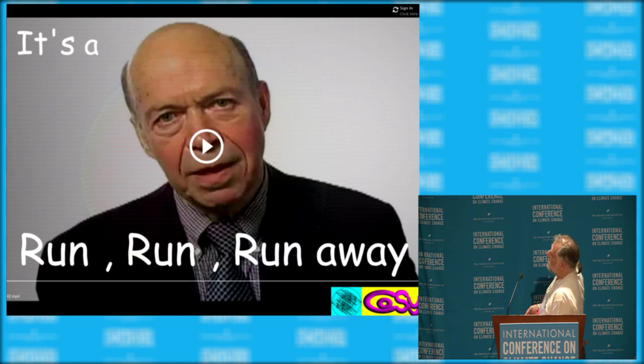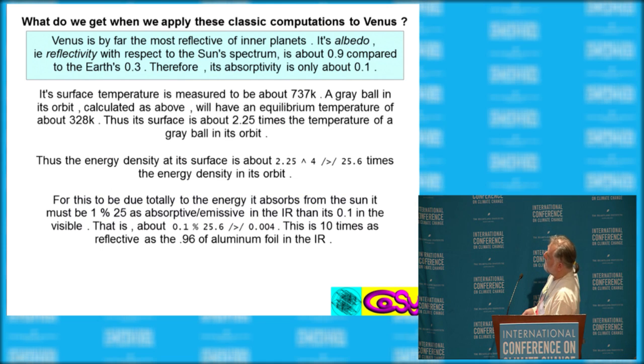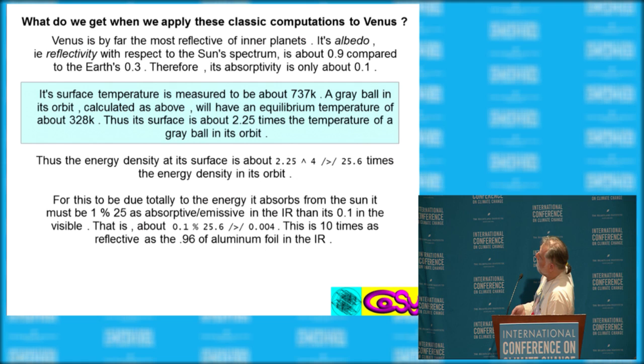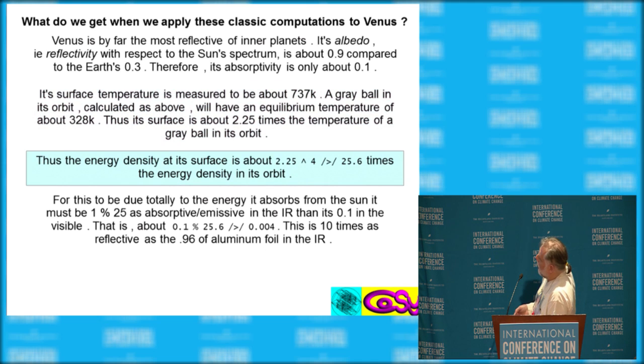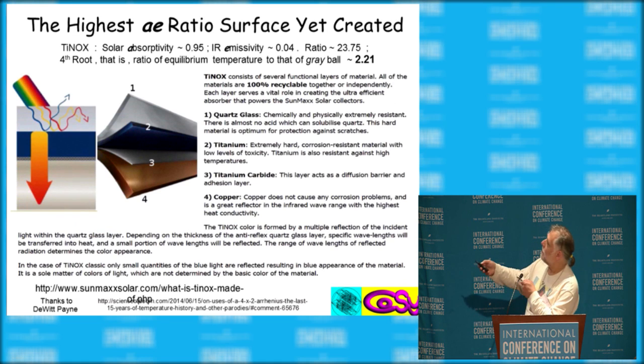Now, Venus. We get to James Hansen. It's a runaway. If we apply these computations to Venus, Venus's surface is about two and a quarter times what the gray value temperature is.